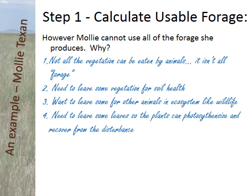Second, you've got to leave some vegetation behind for soil health. Soil is a living entity that has organic matter for microbes and for holding water, so you have to leave some vegetation to hold the topsoil and keep the soil healthy. Third, there are a lot of other animals in the ecosystem besides livestock — insects, wildlife from large ungulates like deer and elk to rodents and other smaller animals — so you need to leave some forage behind for them. Finally, the plants themselves need photosynthetic material to survive disturbances and get their usable carbon, so you need to leave some leaves behind for the plants.